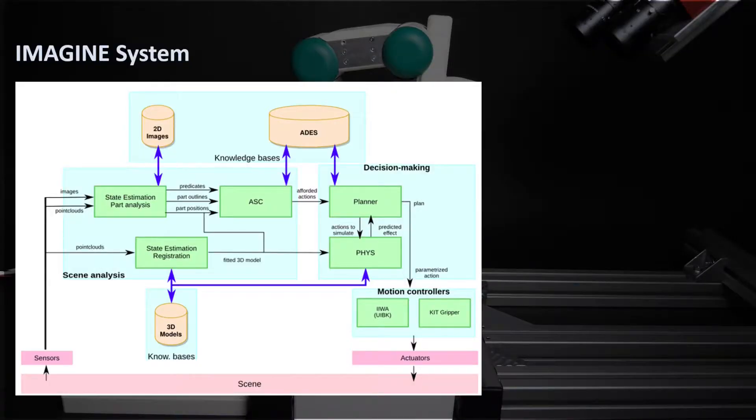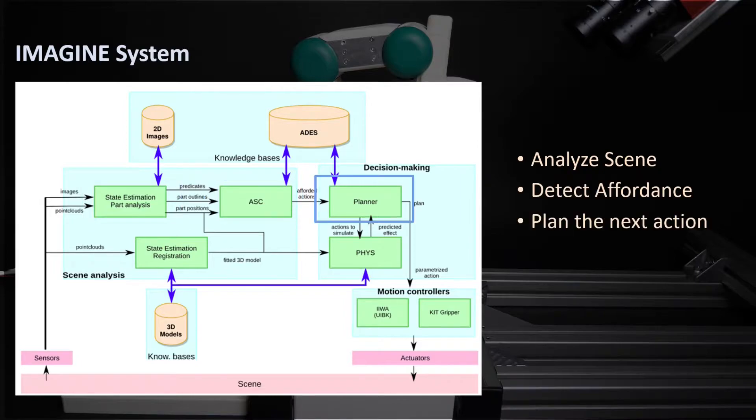The Imagine system autonomously analyzes the current scene, detects affordances, decides the next disassembly actions, and executes the parameterized actions on the real robot. The simulation is requested by the planner to reduce the uncertainty of the next decision. The system can also re-plan the action in case of failure and adapt the decision-making to the new scene.